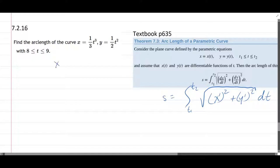We have x equals 1/3 t cubed, so x prime is t squared. y is 1/2 t squared, so y prime is just t.